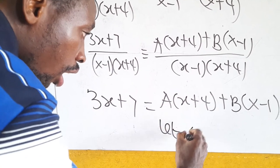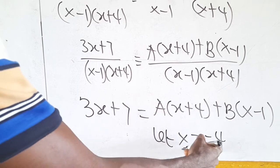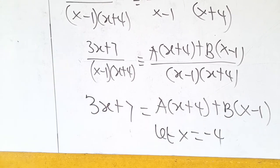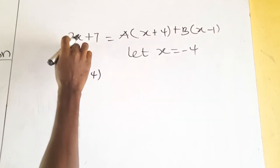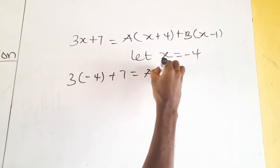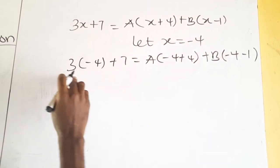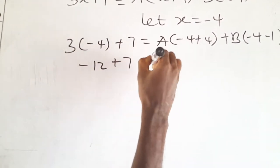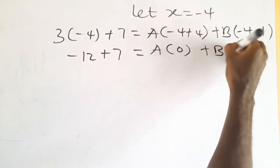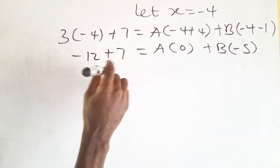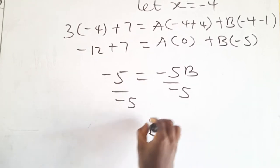We let x equal negative 4. When we substitute negative 4, the term (x + 4) becomes 0, so the A term vanishes and we can find B. So: 3(−4) + 7 equals A(−4 + 4) plus B(−4 − 1). That gives −12 + 7 equals 0 plus B(−5), so −5 equals −5B, and therefore B equals 1.